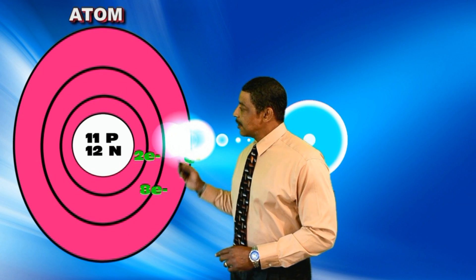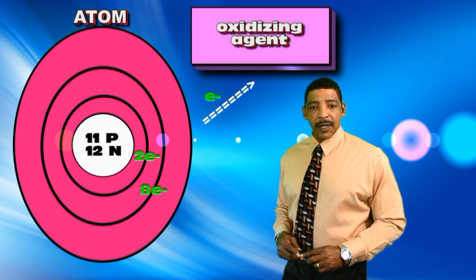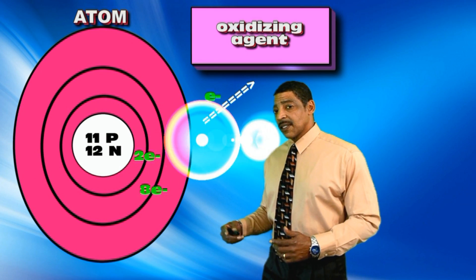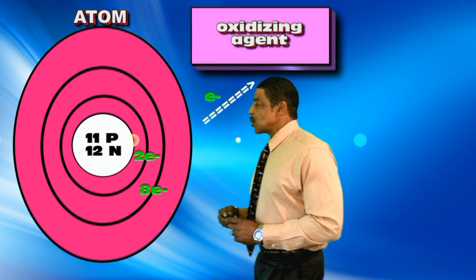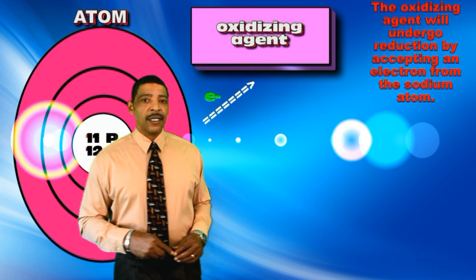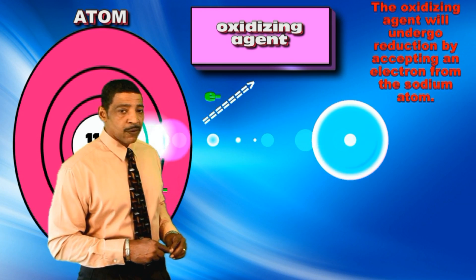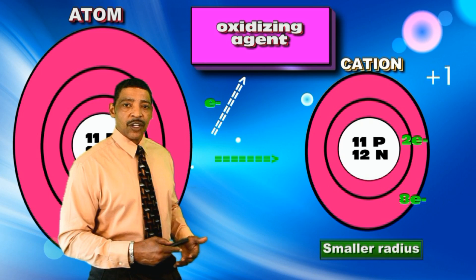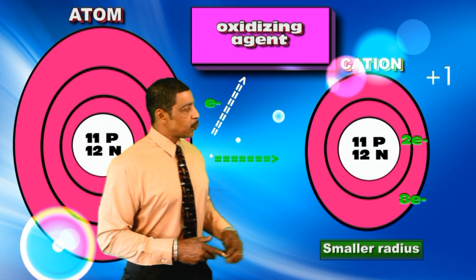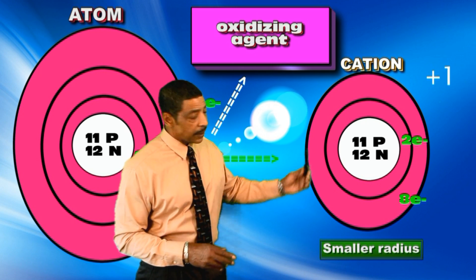Now consider the element sodium, whose Bohr model contains 11 protons and 12 neutrons, with 3 electron shells and an electron configuration of 2-8-1. In the presence of the proper oxidizing agent — a substance that will accept electrons from another substance — the sodium atom will transfer its lone valence electron to the oxidizing agent, resulting in the formation of a positively charged ion called a cation. The resulting radius of the cation will be smaller than the radius of the atom.